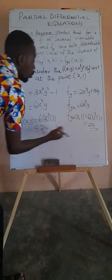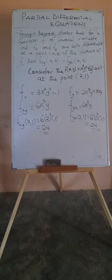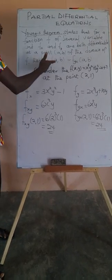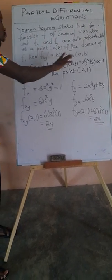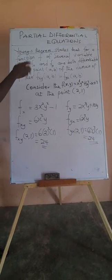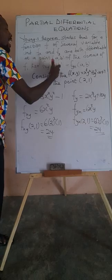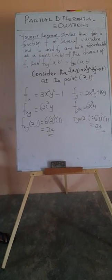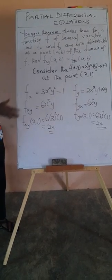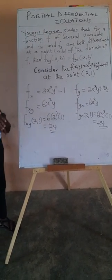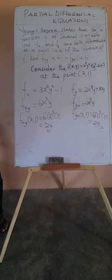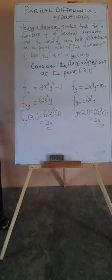You see that they are the same — that proves Young's theory. Young's theory says that the partial differential with respect to X then Y is always equal to the partial differential of F with respect to Y then X at a given point. I hope you understand. Play back the video and go through the calculations to support the argument. The next thing we will talk about is how to classify partial differential equations.